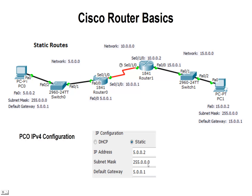The subnet mask is 255.0.0.0, since this is a Class A network. Our default gateway is 5.0.0.1, which is that port on the router that the PC is connected to. So all its IP packet traffic is going to go to that port on that first router.